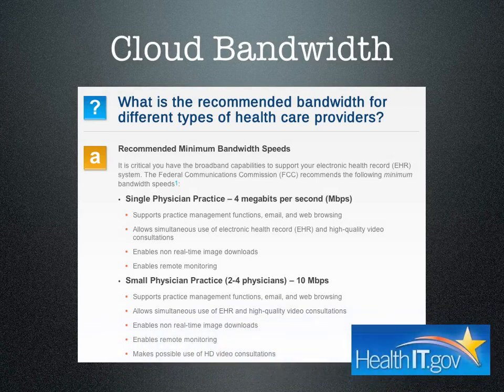This is from healthit.gov, a useful resource on bandwidth recommendations for cloud-based systems. For a single doctor practice, they recommend 4 megabits per second, and keep in mind this needs to be symmetric — not only 4 megabits download, but 4 megabits upload, and it's the upload bandwidth that's really going to cost you money. We share our internet amongst four doctors and have 10 megabits per second, as recommended for a small practice. That 10 megabits per second upload and download costs us in New York City $800 every month, so bandwidth is not cheap and is a cost you have to factor in.